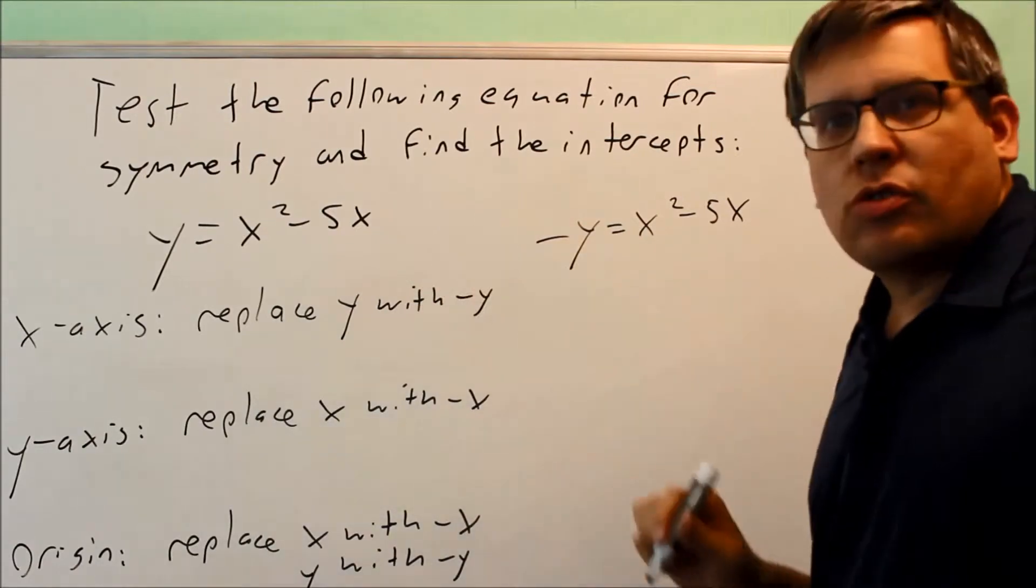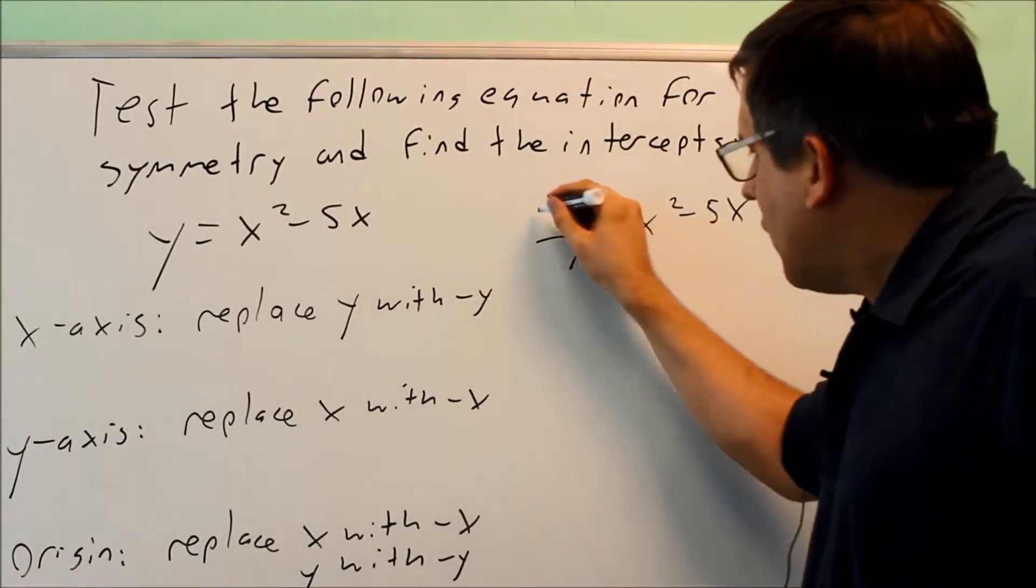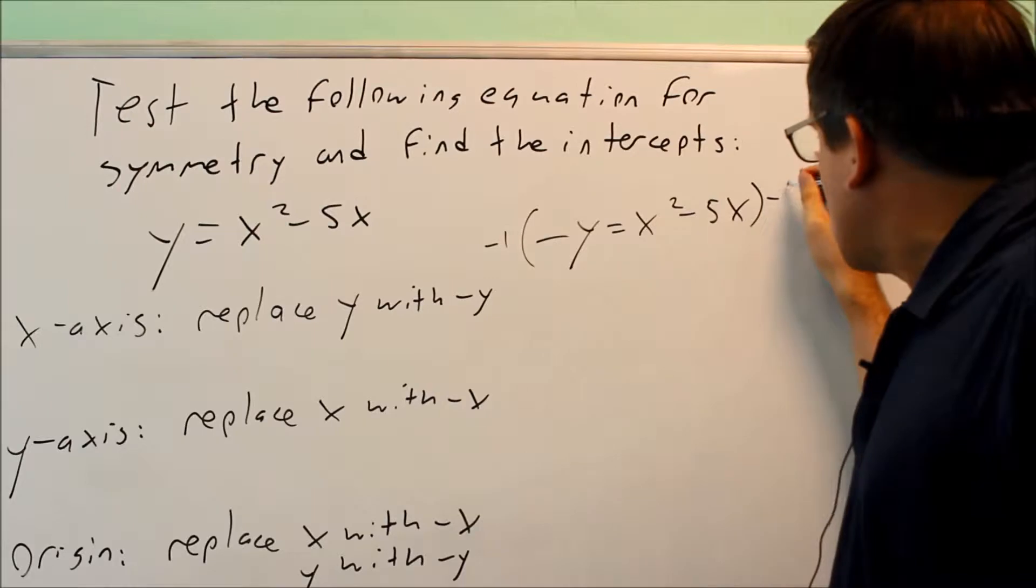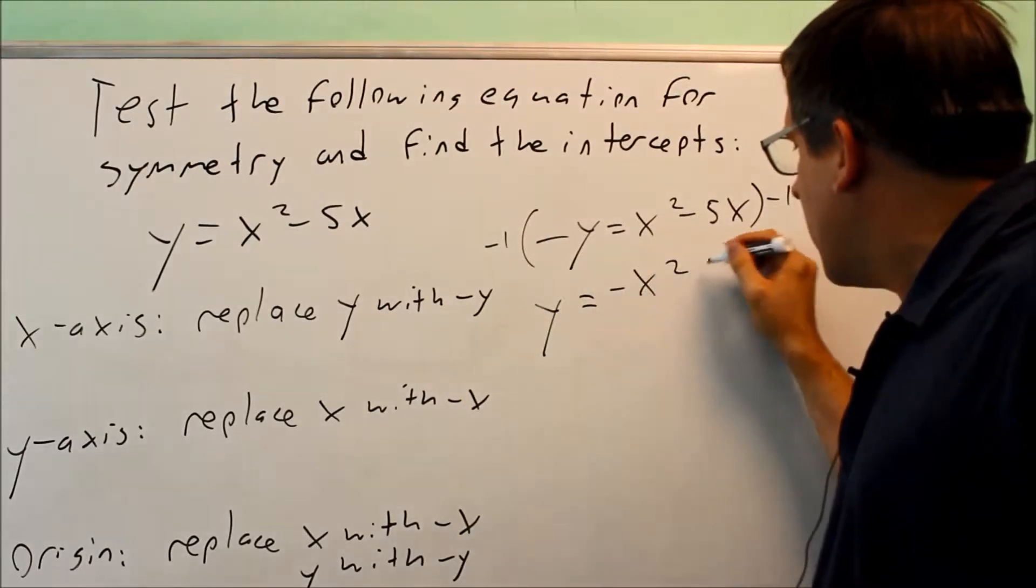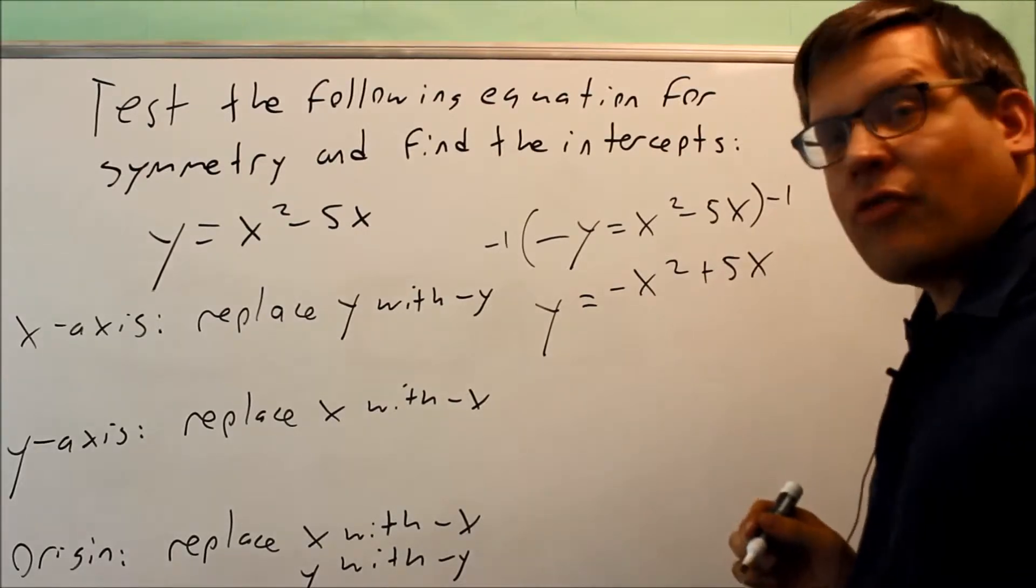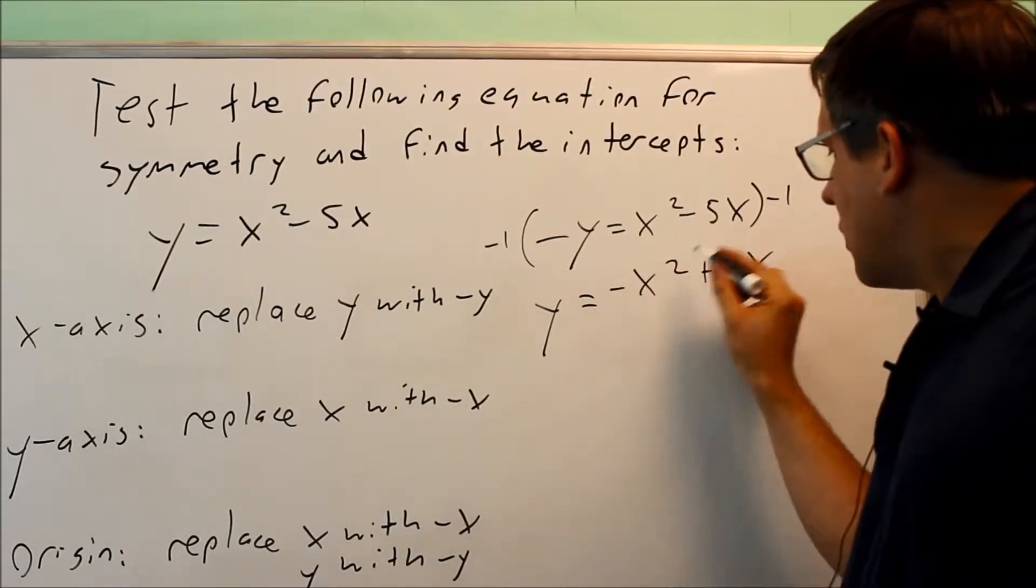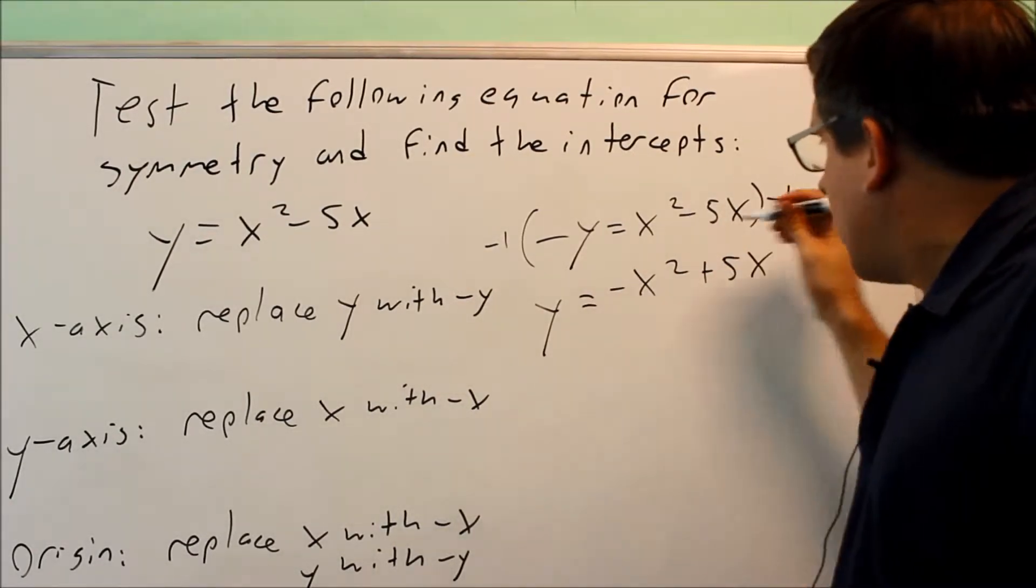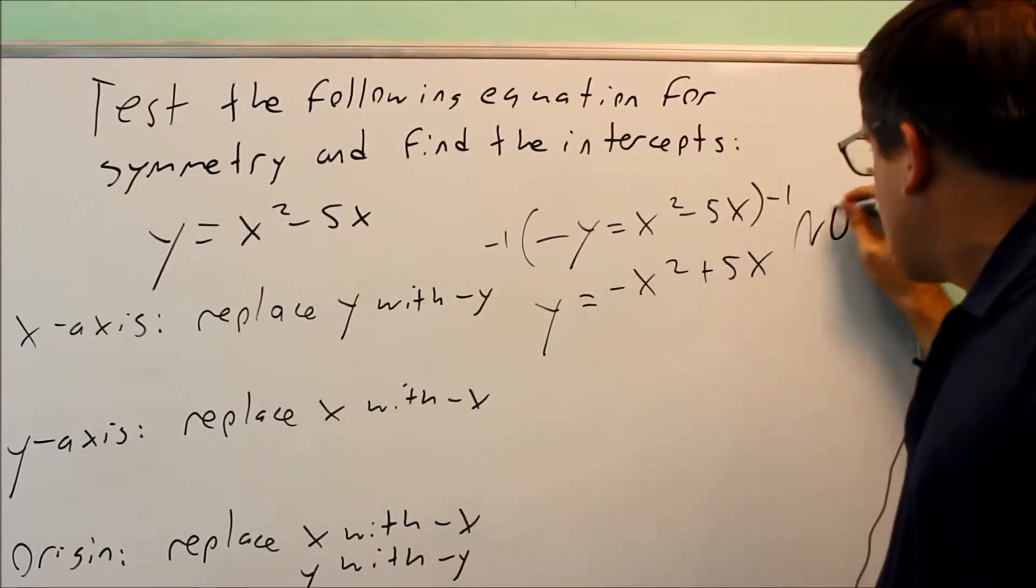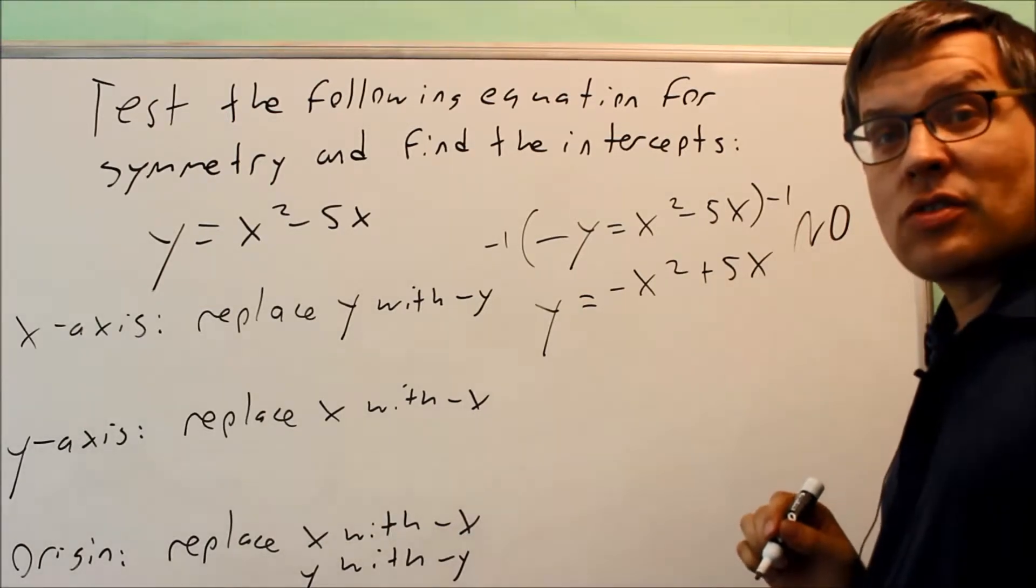This is not equal to the original equation. Even if we multiply both sides by -1, we get y = -x² + 5x, which is still not equal to the original because both signs are different. Therefore, it does not have x-axis symmetry.